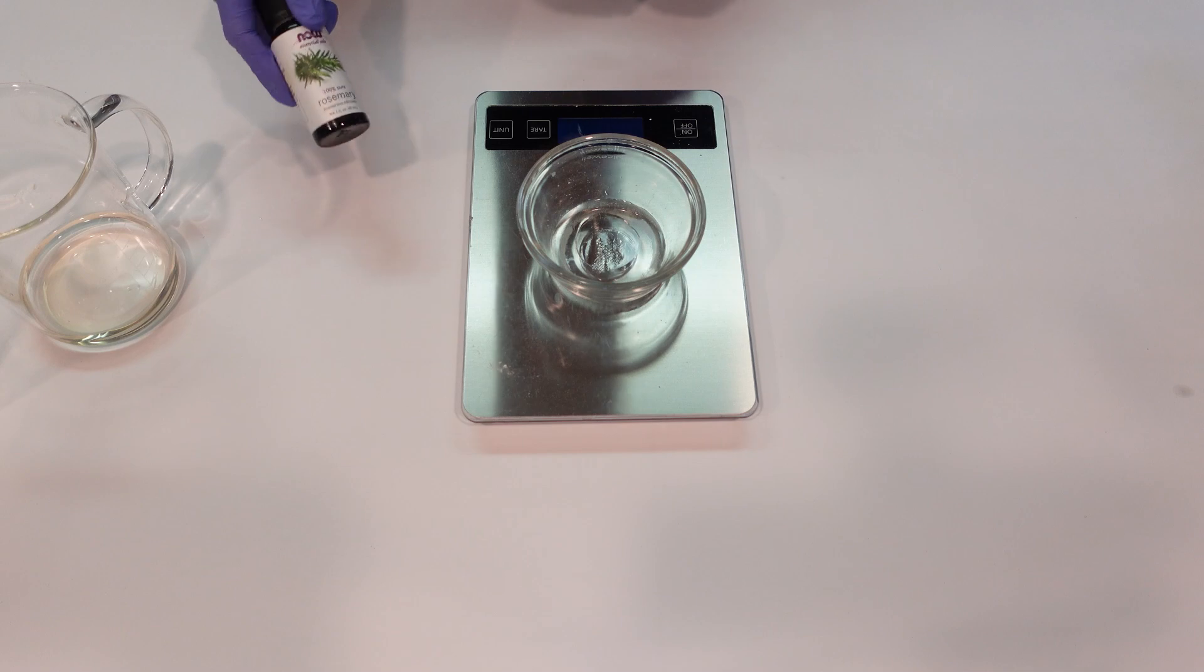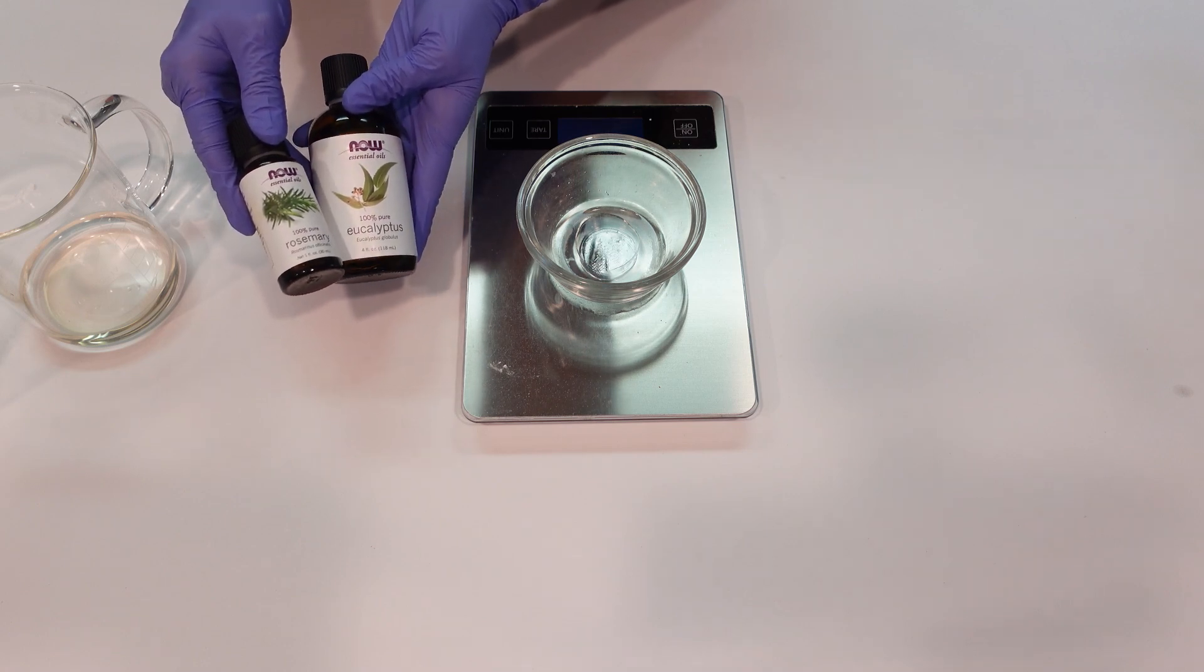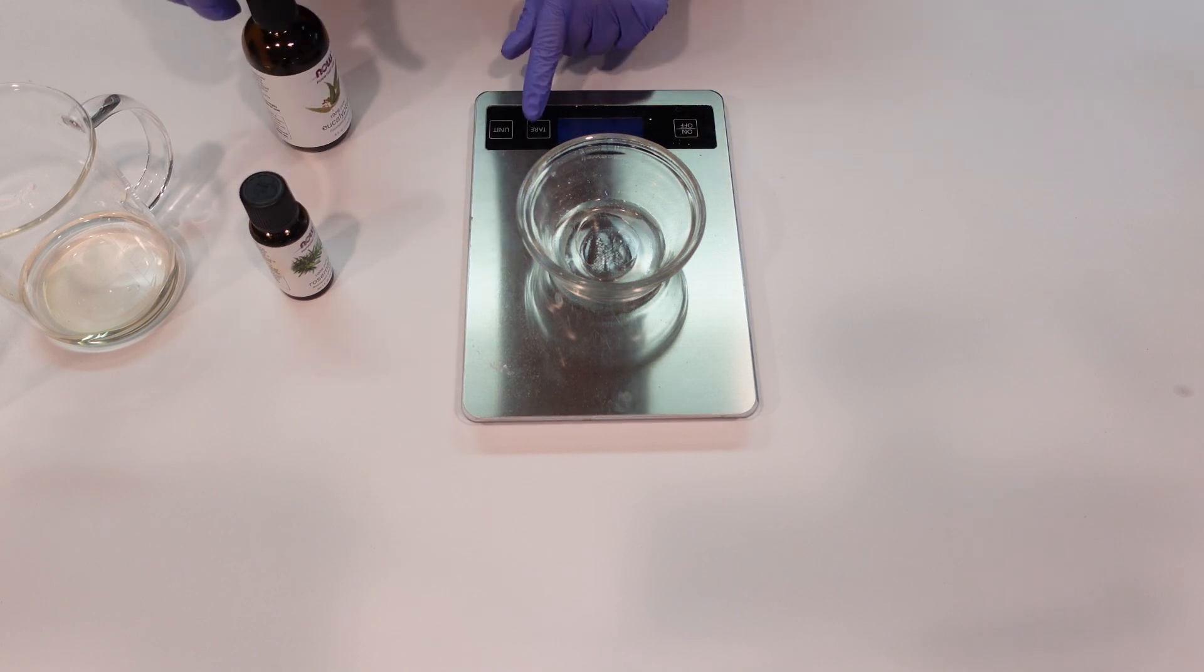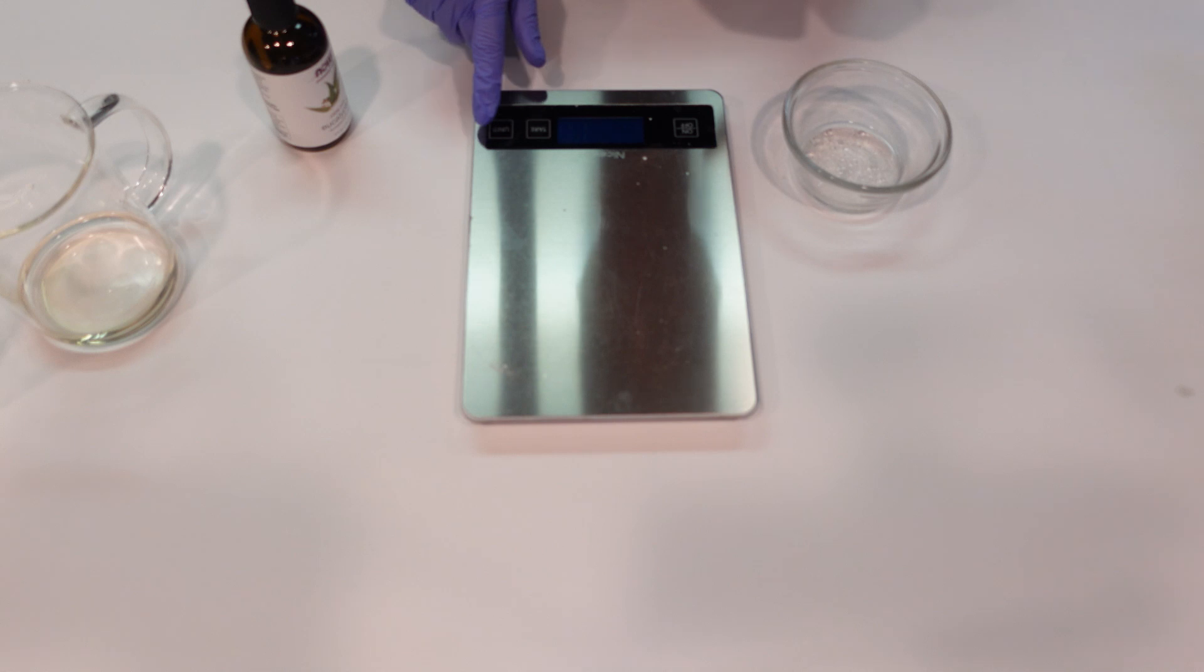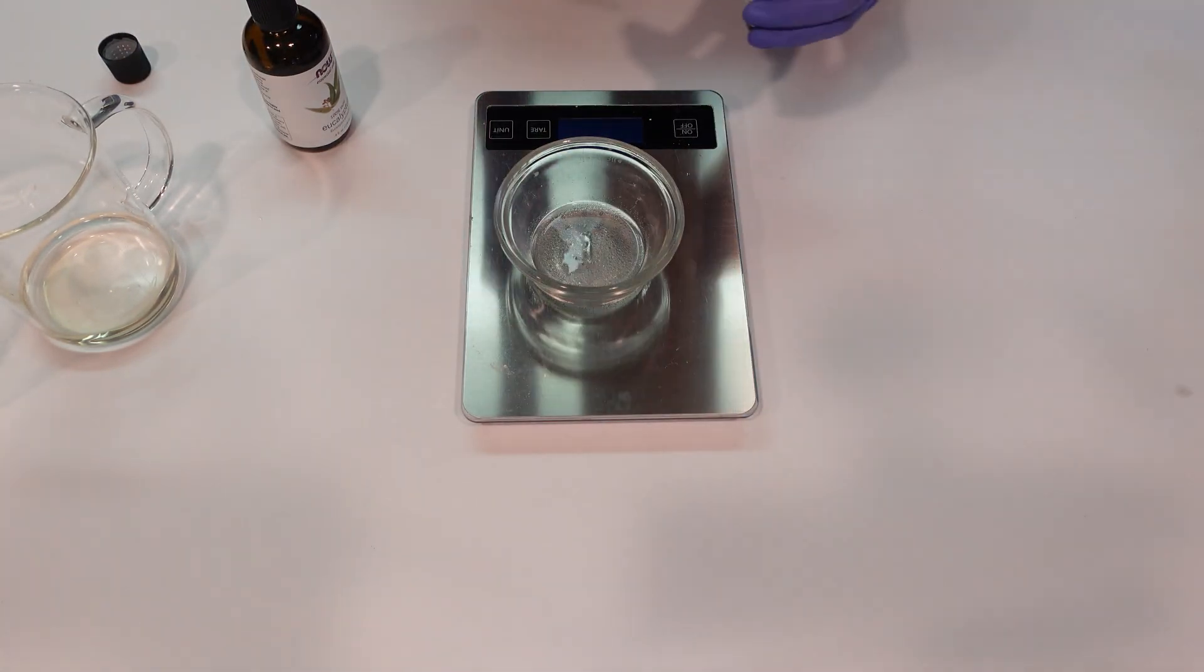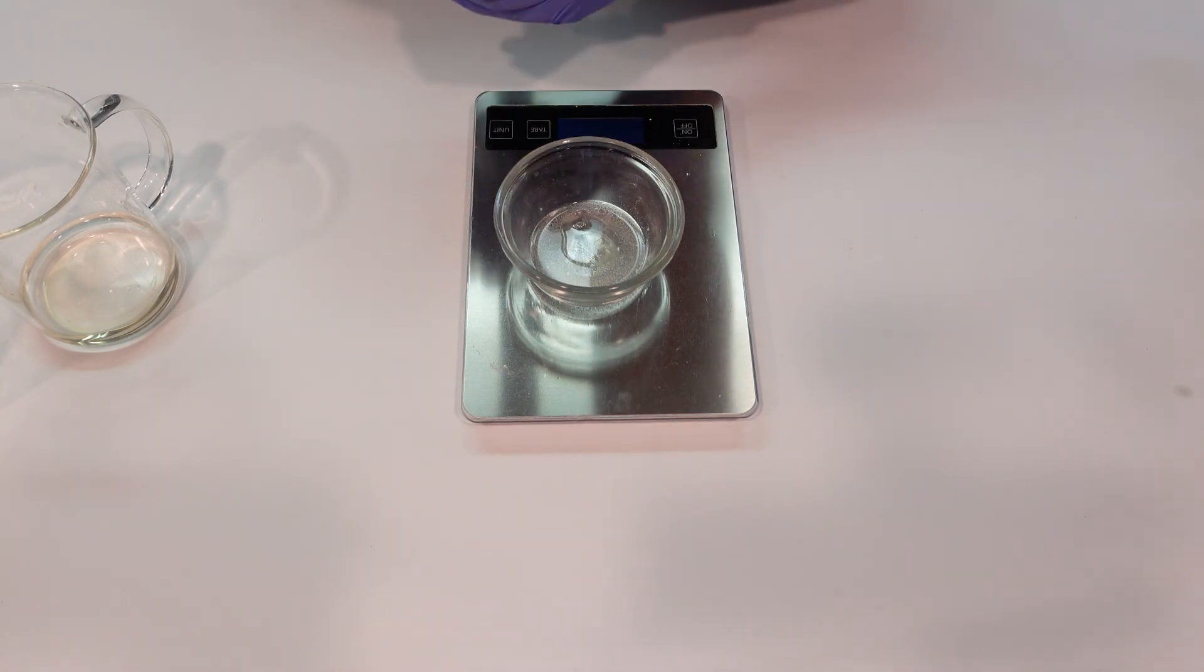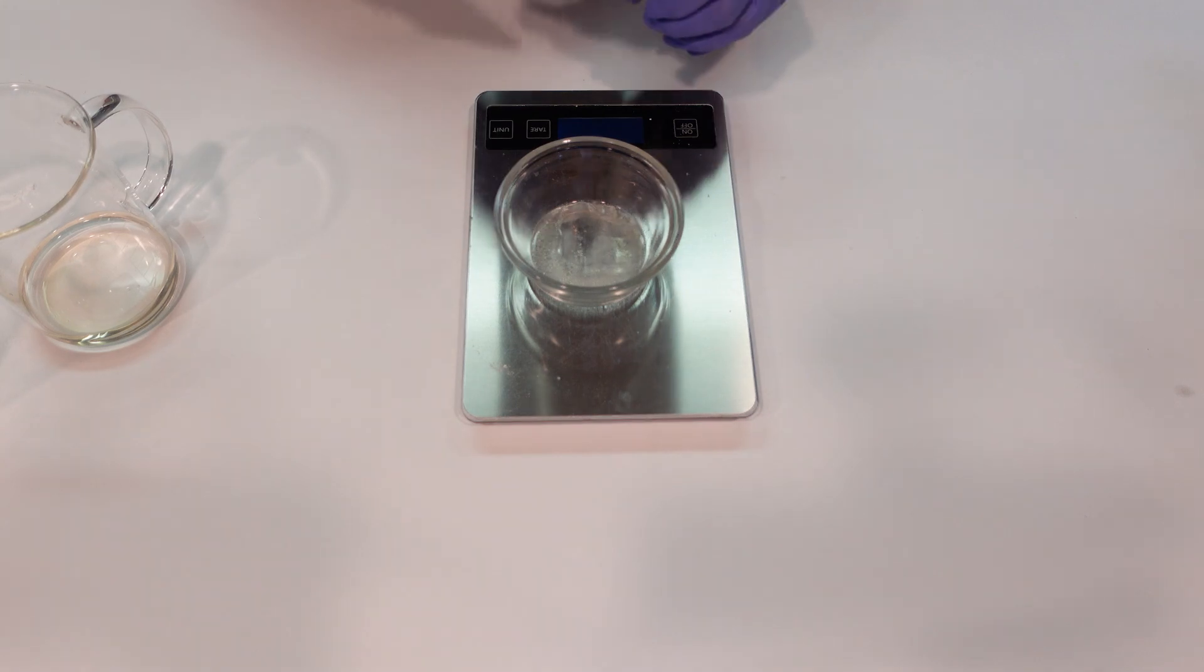And now we're going to be adding in some essential oils. Now this is going to help the deodorant smell really nice, but it also has some function to it as well. So we're going to be using a combination of rosemary and eucalyptus essential oils. Again, the rosemary is great smelling and it's going to help to prevent bacteria from growing and it's very good at detoxifying. And then the eucalyptus is very fresh smelling, goes really good with the rosemary combination here.